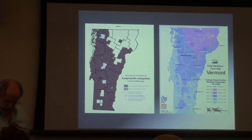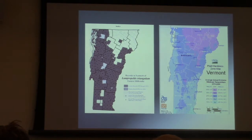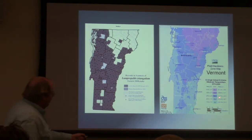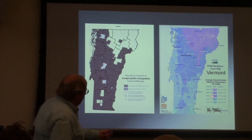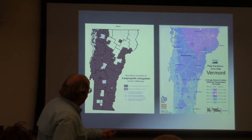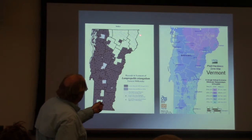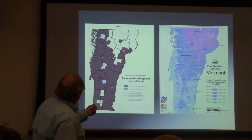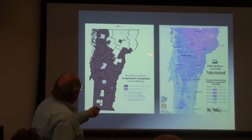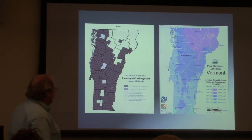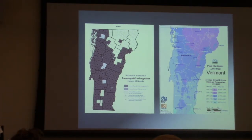I showed a variation of this at this meeting last year, but I just think this is so cool. If you look at hardiness zone 4B and look at where that is, then look at the distribution of this critter — it looks pretty well limited by climate. And so you wonder why would that be?